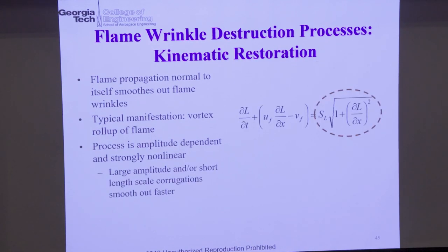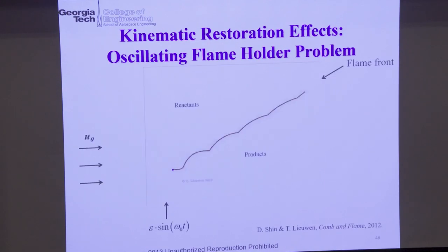This process is amplitude dependent — it's very nonlinear. If you assume linear, you lose kinematic restoration. It's a nonlinear effect. Larger amplitude corrugations, or shorter length scale corrugations, get smoothed out faster.